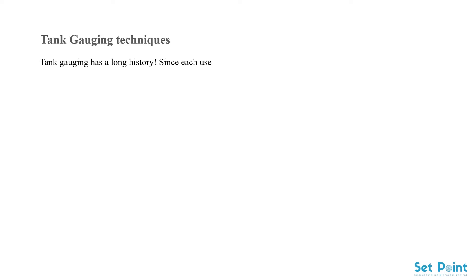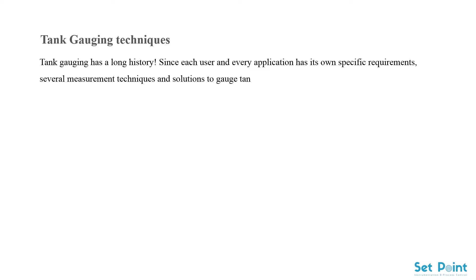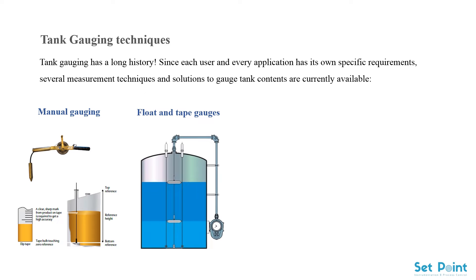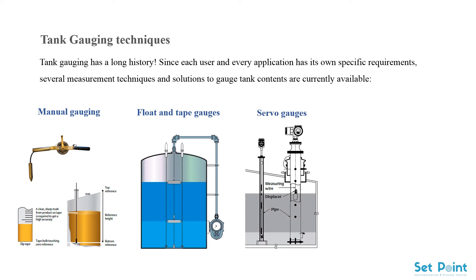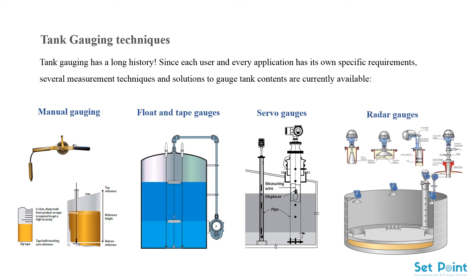Tank gauging has a long history. Since each user and every application has its own specific requirements, several measurement techniques and solutions to gauge tank contents are currently available, including manual gauging, float and tape gauges, servo gauges, and radar gauges. In this tutorial, we will focus on the servo tank gauging system.